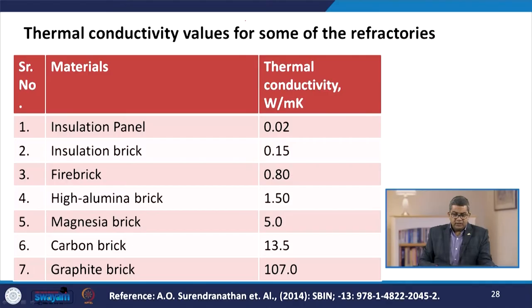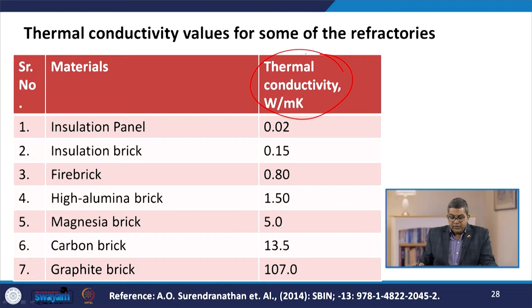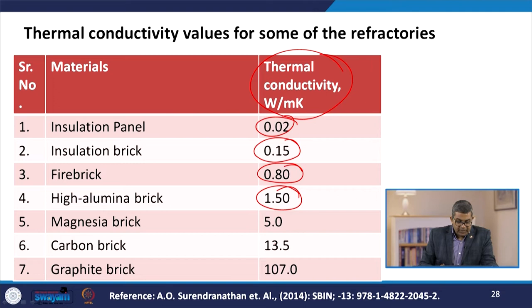The thermal conductivity values for various refractories in W/m·K are: insulation panel 0.02, insulation brick 0.15, fire brick 0.80, high alumina brick 1.50, magnesia brick 5.0, carbon brick 13.5, and graphite brick 107.0.